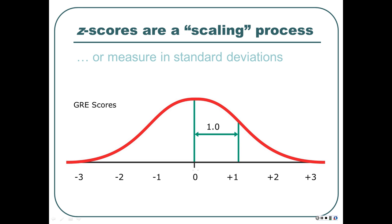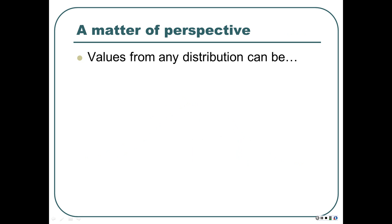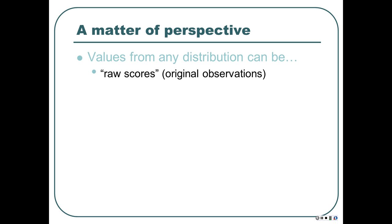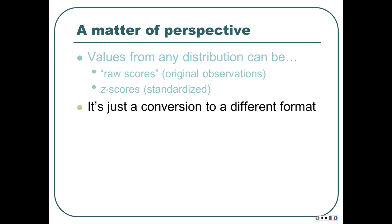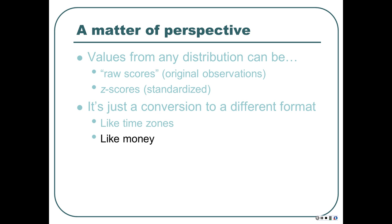You can measure in raw scores or in standard deviations. Starting from the mean — zero standard deviations from the mean — whatever score is one standard deviation away gives a Z-score of one, then two, then three. One standard deviation down is negative one, negative two, negative three. Values from any distribution can be seen as raw scores — the original observations like your actual test score or height — or as Z-scores after they've been standardized through the formula, expressing how many standard deviations the raw score is from the mean and in which direction. It's just a conversion to a different format, like time zones or currency exchange.